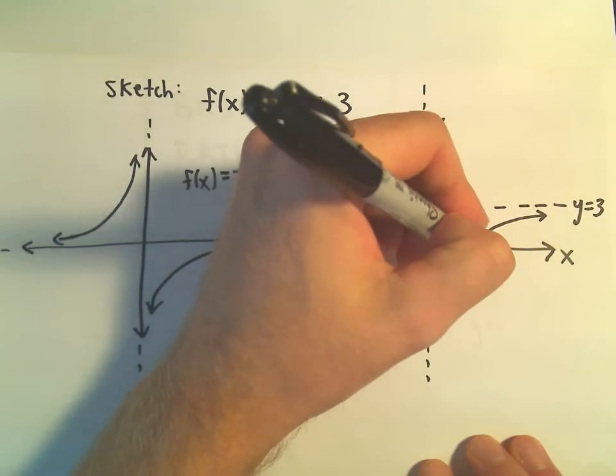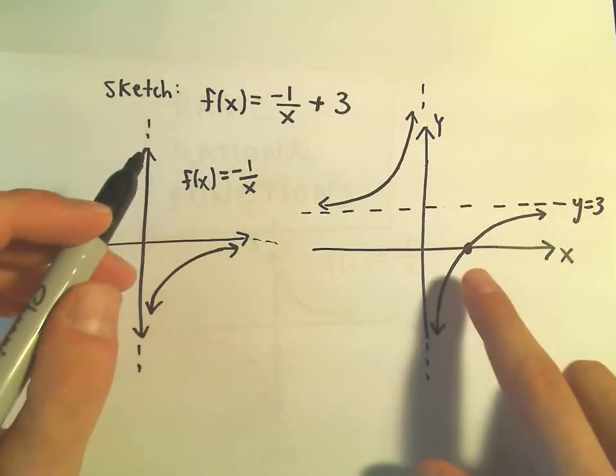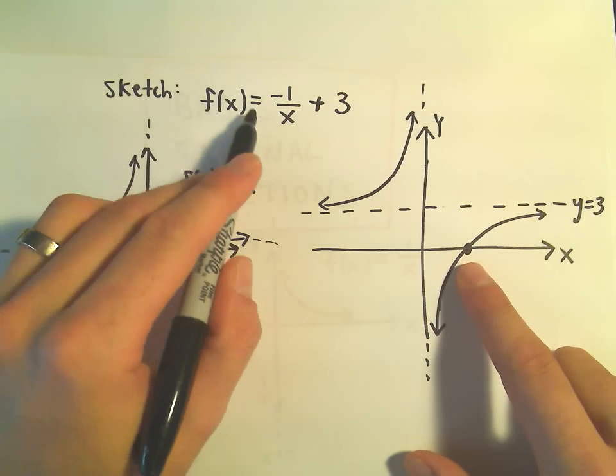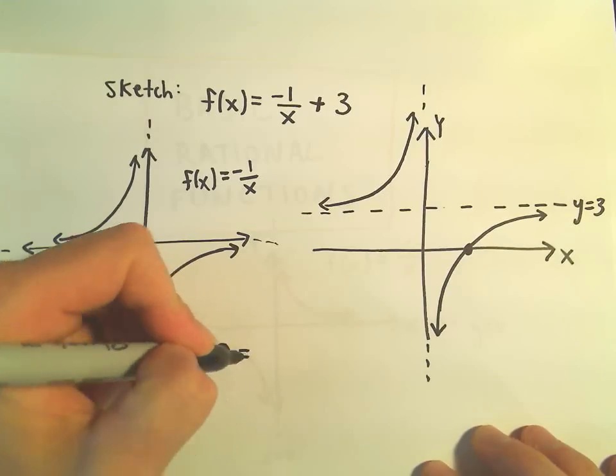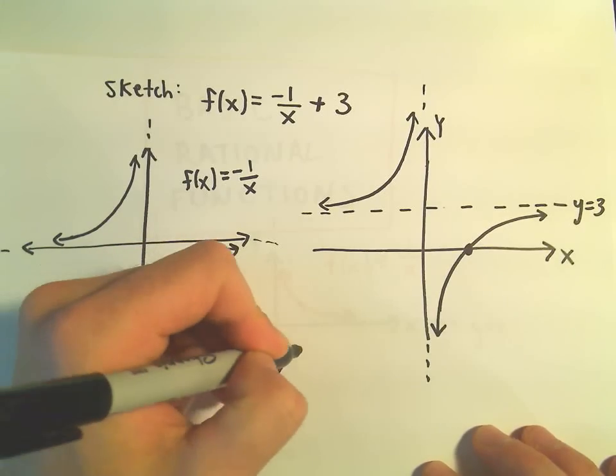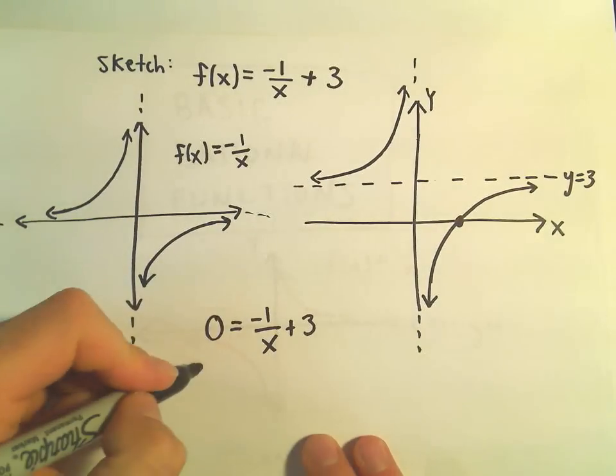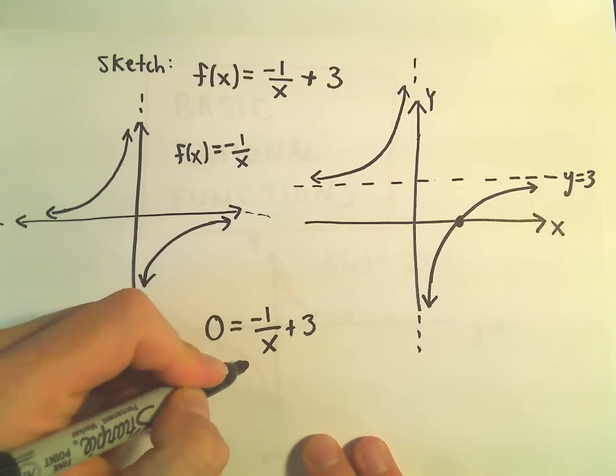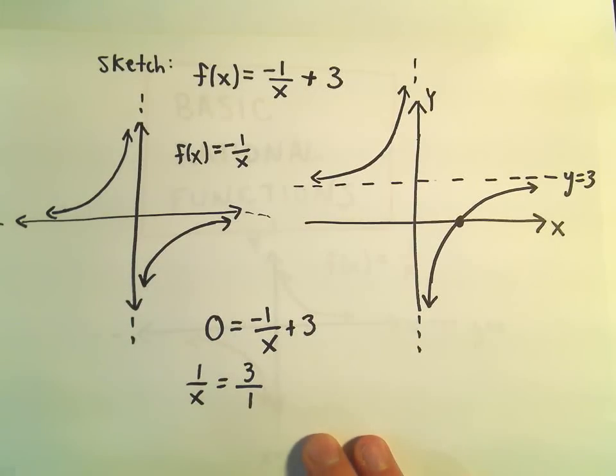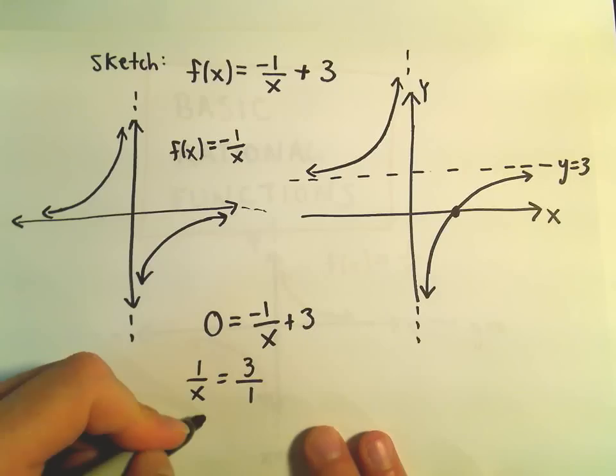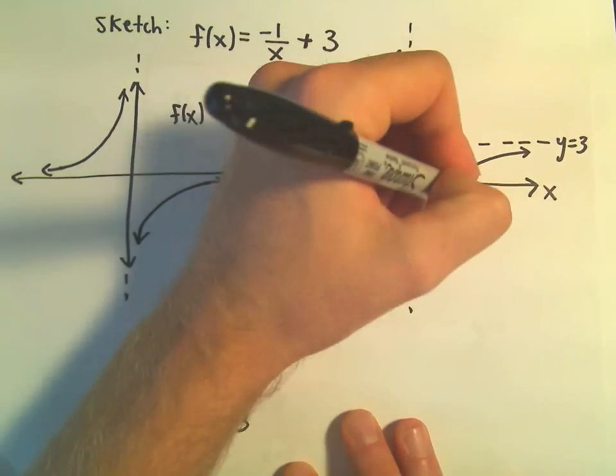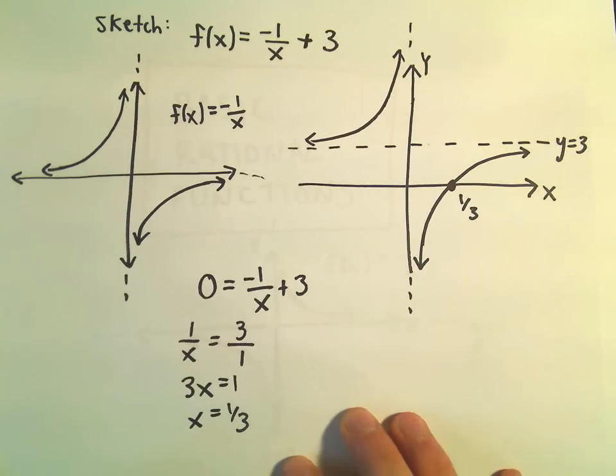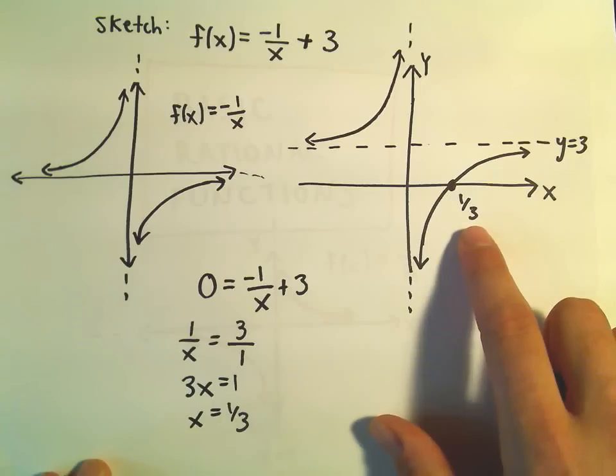We could even find out this x-intercept if we wanted to. We could find out the coordinates, because to find x-intercepts, we just plug in 0 for f of x. So we would get 0 equals negative 1 over x plus 3. We could add 1 over x to both sides. I'm going to write 3 as 3 over 1. If we cross-multiply, we would get 3x equals 1, or x equals 1 third. So it's actually crossing the x-axis here at this point, at the x-coordinate of 1 third.